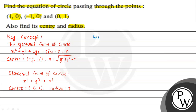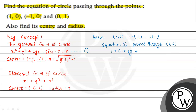The given points are (1,0), (-1,0), and (0,1). Using the general form of the circle as equation 1, suppose equation 1 passes through point (1,0). We can write 1 + 0 + 2g + 0 + c = 0, which gives us 2g + c = -1. Consider this as equation 2.